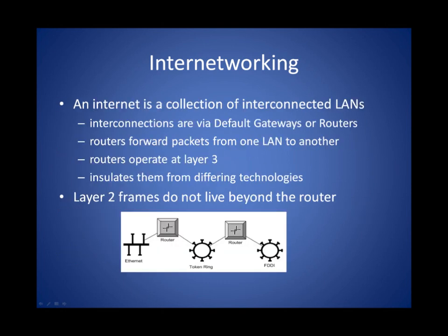When we connect networks together, such as Ethernet or older stuff like Token Ring or FDDI, we're really creating an Internet or doing Internetworking. This is where the third layer of the TCP/IP model gets its name. The device that does this for us is a router, also operating at Layer 3. Routers are also known by the name Default Gateway, which is what every host uses to connect to another network. Layer 2 frames don't live beyond their local area network — they're destroyed, and then another frame is created on the opposite side of the router.